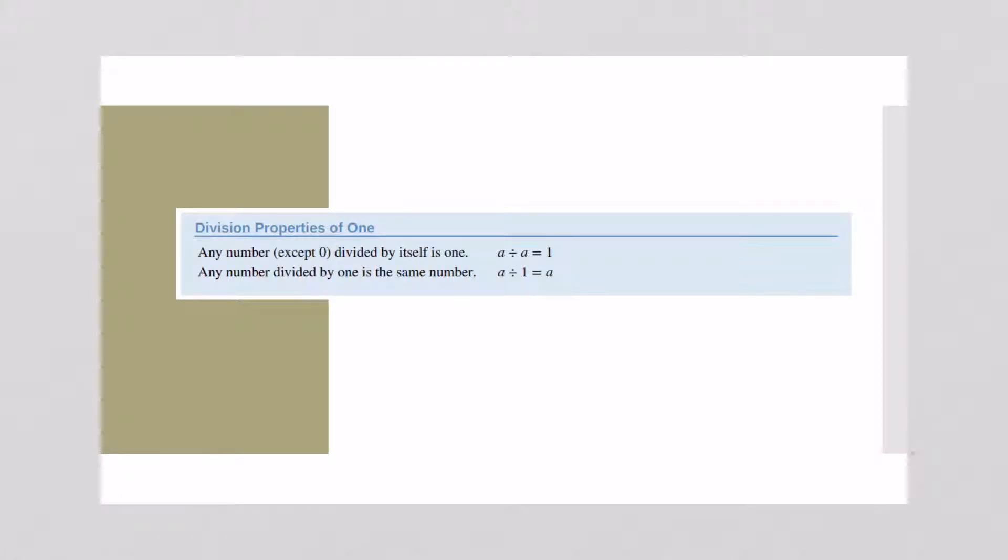This is an important concept right here. Any number divided by itself is 1, so 5 divided by 5 is 1. Also any number divided by 1 is itself, so 17 divided by 1 is 17. Those are important things for you to remember as we move on through this lesson.